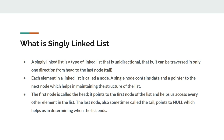In this video, we are only going to cover the singly linked list. Each element in a linked list is called a node, and a single node contains data and a pointer to the next node, which helps in maintaining the structure of the data. That is the reason why it is called a linear data structure — because we maintain the structure of data, and it will help us to traverse the linked list in a single run. The first node is called the head node, and it points to the first node of the list, helping us to access every other element.